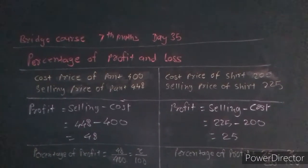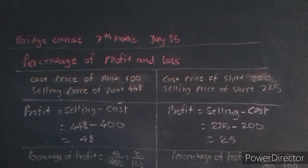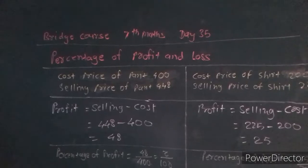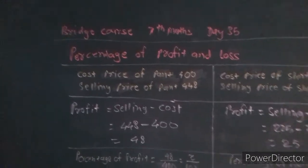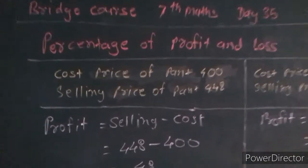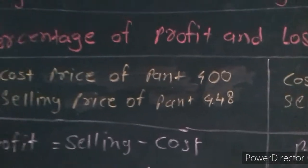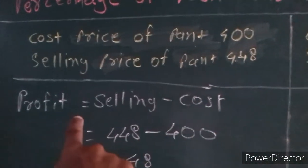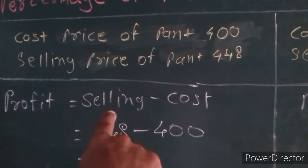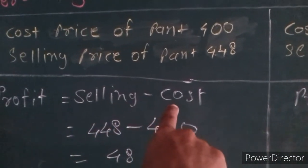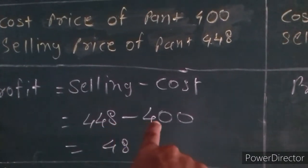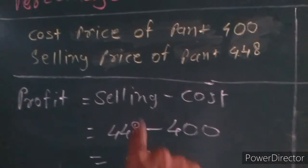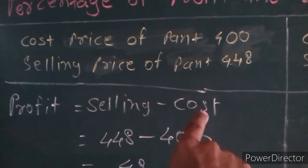Now look at the black book. The cost price of a pant is Rs 400 and the selling price of a pant is Rs 448. So profit is equal to selling price minus cost price: 448 minus 400 equals Rs 48, because the selling price is more than the cost price.